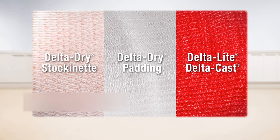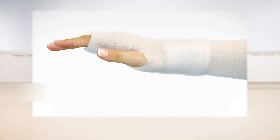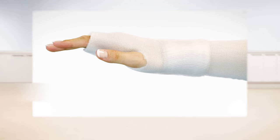There are many options, stockinette with padding or the thicker Delta Dry soft liner. A targeted application of Delta Dry padding can provide additional cushioning of bony parts.